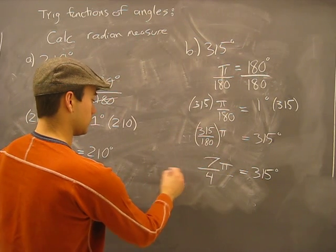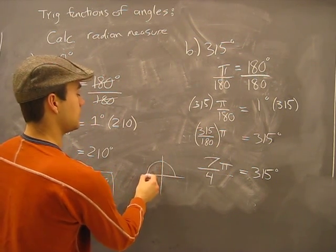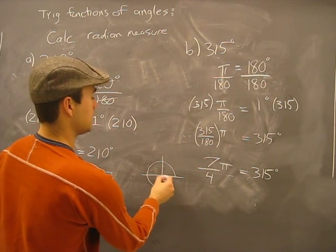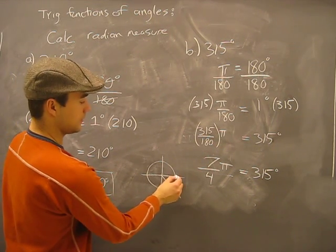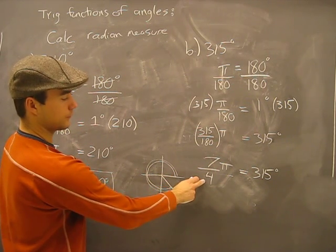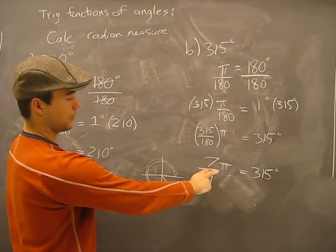So again, on the circle, 315 degrees. Well, let's say that's 180. There's 270. Probably somewhere around there. There's our line.